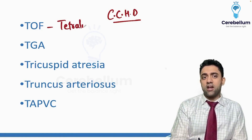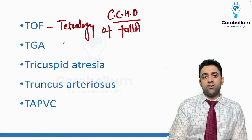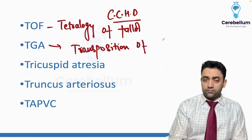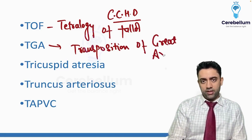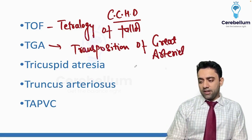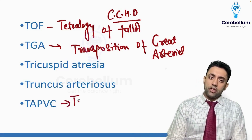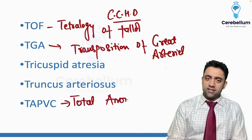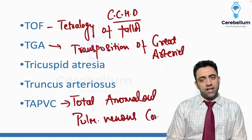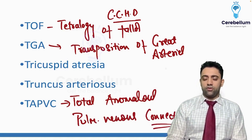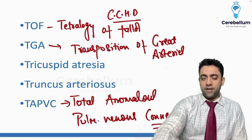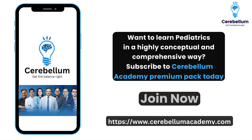TOF is Tetralogy of Fallot. TGA is Transposition of Great Arteries — very important. Tricuspid Atresia, Truncus Arteriosus, and TAPVC — Total Anomalous Pulmonary Venous Connection — just the name you should know. So the five congenital cyanotic heart diseases are: TOF, TGA, Tricuspid Atresia, Truncus Arteriosus, and TAPVC.